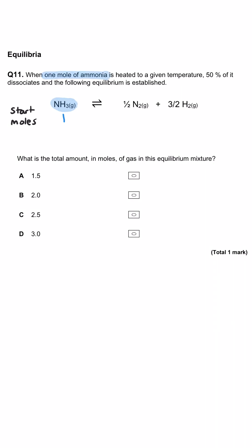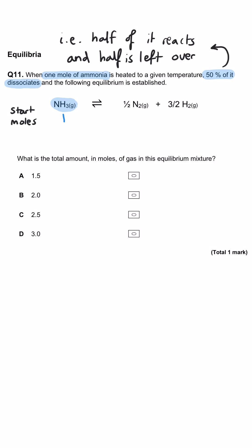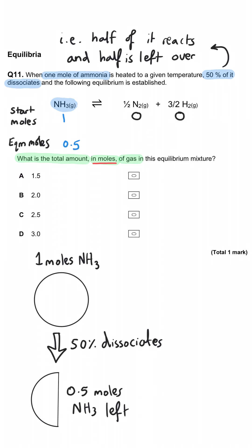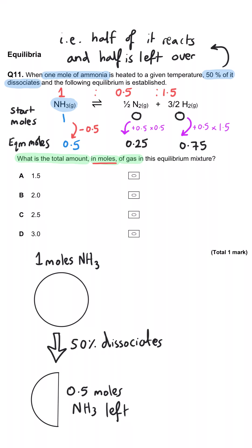When one mole of ammonia is heated to a given temperature, 50% of it dissociates and the following equilibrium is established. What is the total amount in moles of gas in this equilibrium mixture? Starting with one mole of ammonia, if 50% dissociates, we have 0.5 moles of ammonia at equilibrium. The coefficients are 1 to 0.5 to 1.5. Using up 0.5 moles of ammonia produces 0.25 moles of nitrogen and 0.75 moles of hydrogen. The sum of all three — 0.5 + 0.25 + 0.75 — is 1.5 moles total. So A is correct.